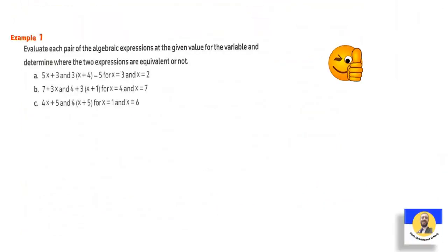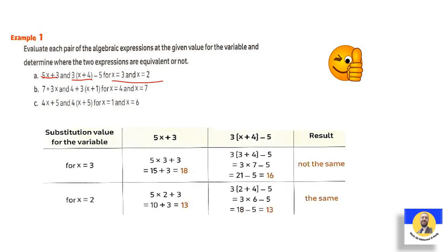Evaluate each pair of algebraic expressions at the given value for the variable and determine whether the two expressions are equivalent. We have two expressions and want to determine if they're equivalent using given numbers. Take 5x+3 and 3(x+4)−5. Substitute x=3: 5×3+3=18, and 3×(3+4)−5=3×7−5=21−5=16 — not the same! Since one substitution already gives a different result, they are not equivalent.